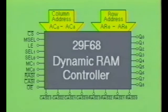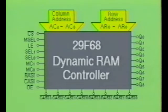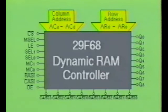The 29F68 dynamic RAM controller IC is designed to be used with 16K, 64K, or 256K dynamic RAMs. The two 9-bit addresses are used to store the row and column addresses provided by the processor, while the two-bit latch from pins SEL0 and SEL1 are used to select one each of the four RAS and CAS outputs.